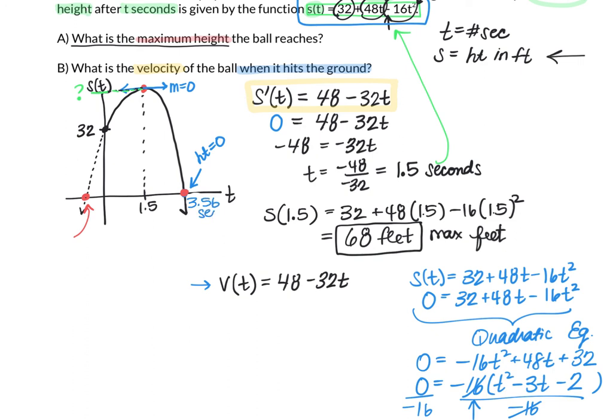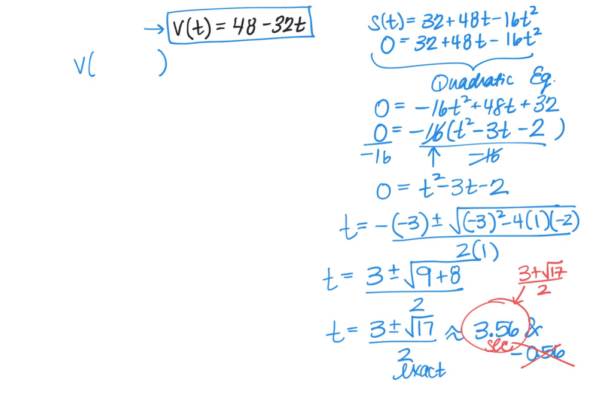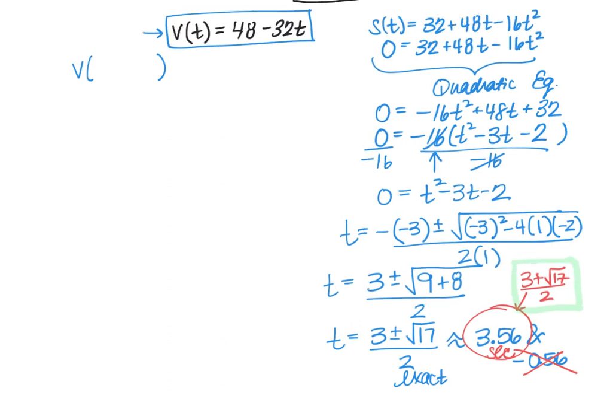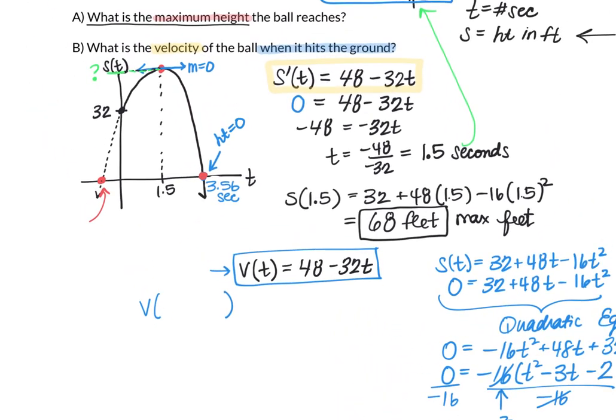The question is asking what's the velocity when the ball hits the ground. Now we use our velocity function and substitute in our value of 3.56. Since 3.56 is a rounded answer, to be precise we'll substitute in the exact form, which was 3 plus √17 over 2. That should give us an estimate for the velocity of approximately -65.97 if I round to two decimal places.